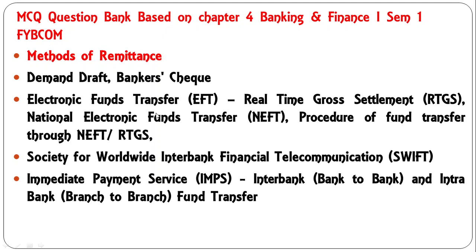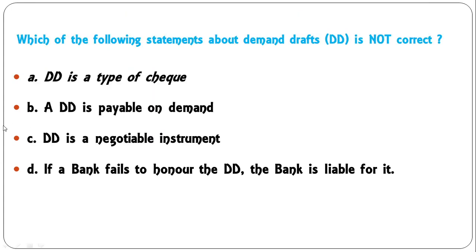The topics covered in this chapter are demand draft, banker's check, and electronic funds transfer mechanism. Without wasting much time, let us move on to the first question: which one of the following statements about demand draft is not correct? DD is a type of check; DD is payable on demand; DD is a negotiable instrument; a bank fails to honor the DD and the bank is liable. The incorrect statement is that DD is a type of check — it is not a type of check.